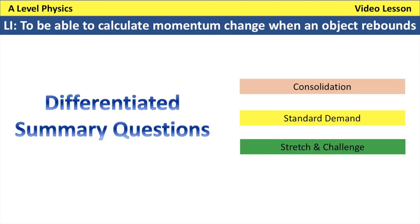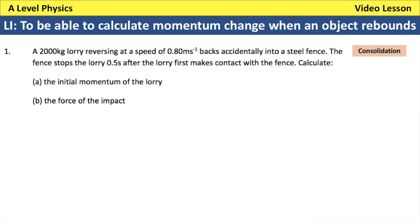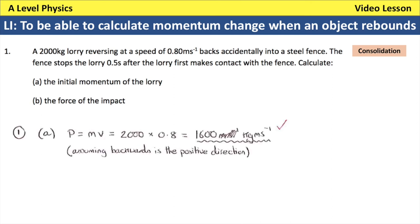Consolidation question one: a 2000 kg lorry reverses at 0.8 m/s and hits a steel fence, which stops it in 0.5 seconds. The initial momentum is 2000 × 0.8 = 1600 kg·m/s. Some students may use −0.8 m/s since it's reversing, giving −1600 kg·m/s, which is also fine. The impact force is 1600 ÷ 0.5 = 3200 newtons.